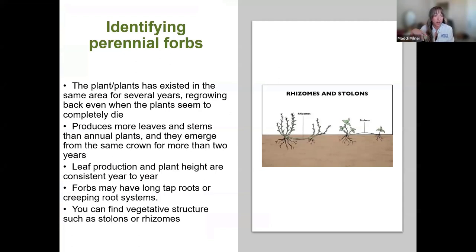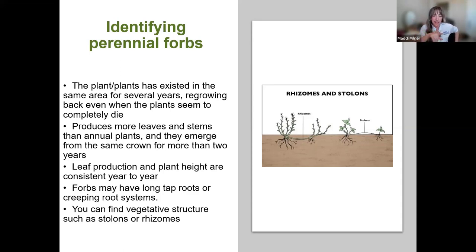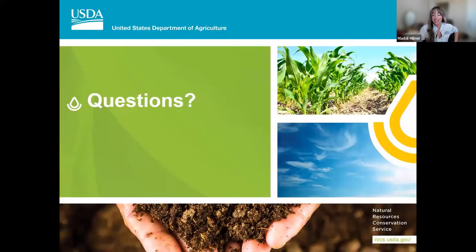You're probably dealing with perennials if you see the same plants in the same area without a significant change in distribution from year to year. Size-wise, they produce more leaves and more stems than annuals, and leaves and stems re-emerge from the same crown for more than two years. Forbs will usually have long taproots. You can also look for creeping root structures such as stolons or rhizomes — rhizomes usually underground, stolons usually above ground. If you're finding those, you're probably dealing with a perennial forb.